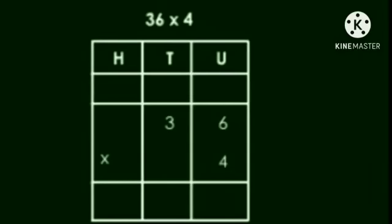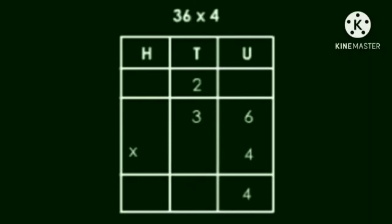Next, 36 into 4. Starting from the units place. 6 into 4, 24. That means 2 tens and 4 units. Carrying over these 2 tens to the 10s place.